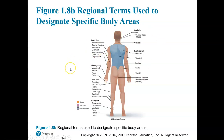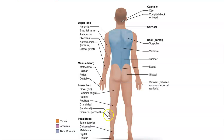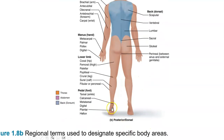Now for the terms on the backside or posterior side: the upper limb shoulder is acromial. Focusing on terms that appear on the posterior portion — the elbow is olecranal, and the forearm is antibrachial whether you're looking at the posterior or anterior side. The metacarpals are the bones of the hand; digital or phalanges are the fingers. The thigh region, whether anterior or posterior, is femoral. Back of the knee is popliteal. The calf is sural. The lateral portion of the leg is fibular or peroneal. The heel is calcaneal. The sole of the foot is plantar.